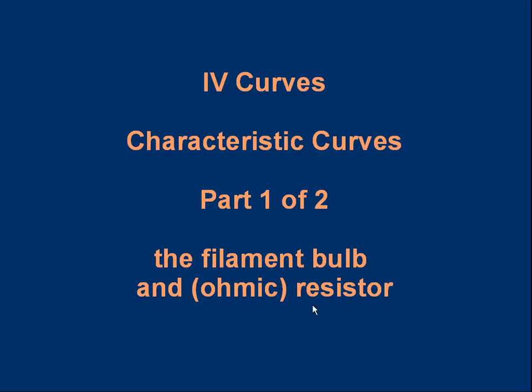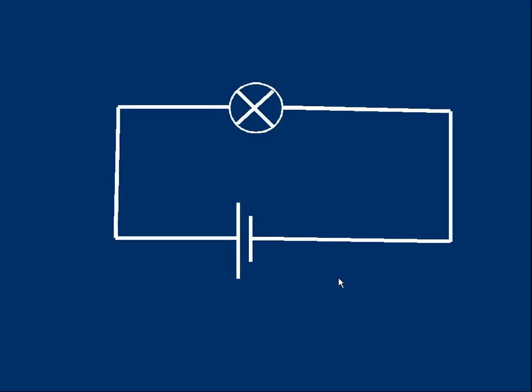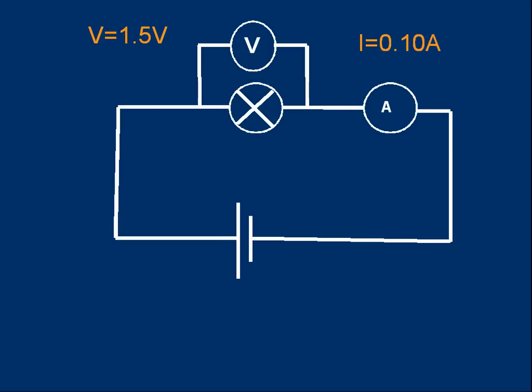Here's a very simple circuit: a filament bulb and cell. A filament bulb is one with a thin wire in the center that gets hot. If we want to know the voltage across the bulb and the current through the bulb, we use a voltmeter and ammeter. The voltmeter gets connected in parallel with the bulb and the ammeter gets connected in series. Typical values might be 1.5 volts across the bulb, 0.1 amps through the bulb. The way I've drawn this shows the positive terminal of the cell on the left, that means the conventional current will go clockwise around the circuit, positive to negative.